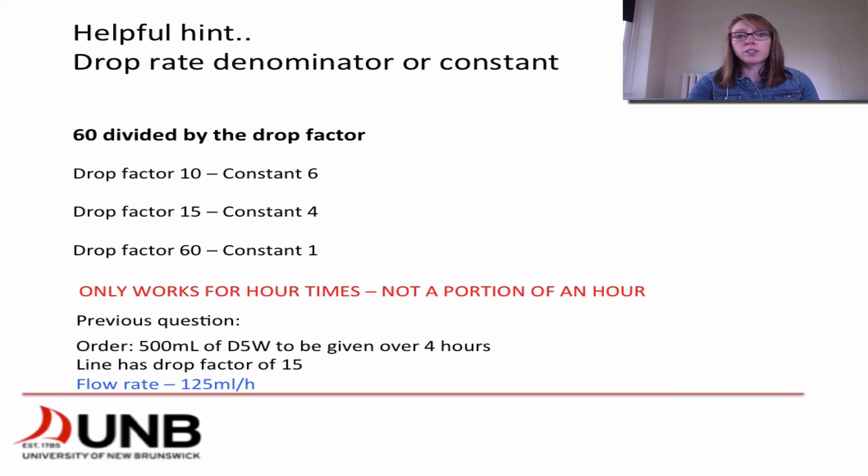So we're going to use the previous question to calculate this out. So it's 500 mLs of D5W to be given over 4 hours. Our line has a drop factor of 15. Our flow rate is 125 mLs per hour. And we got that by dividing the 500 mLs by the 4 hours.